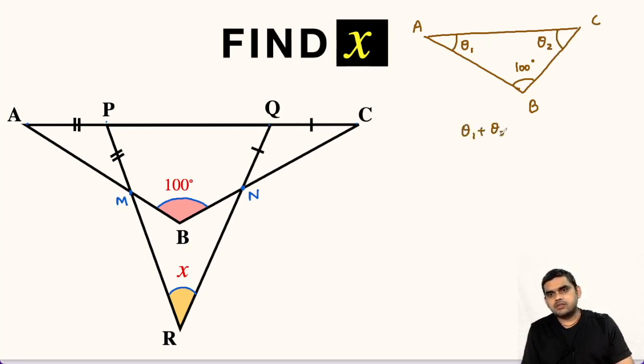So from here we will get theta 1 plus theta 2 equals 180 minus 100, that is 80 degrees.